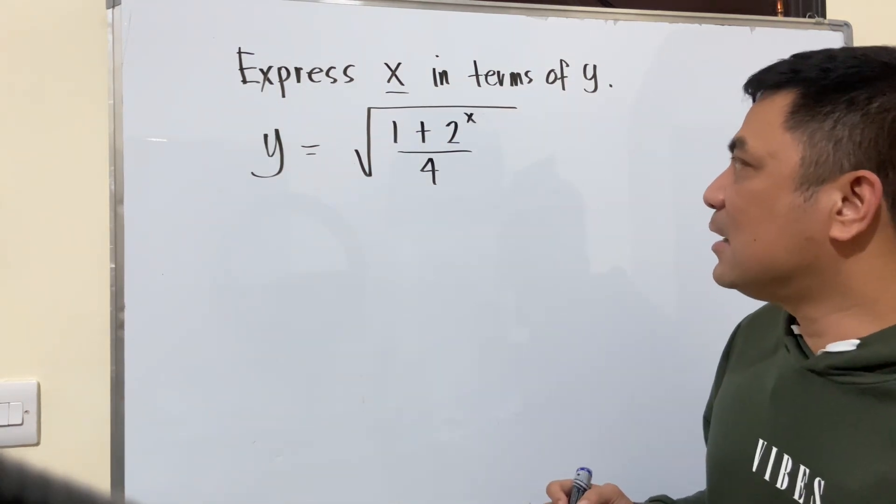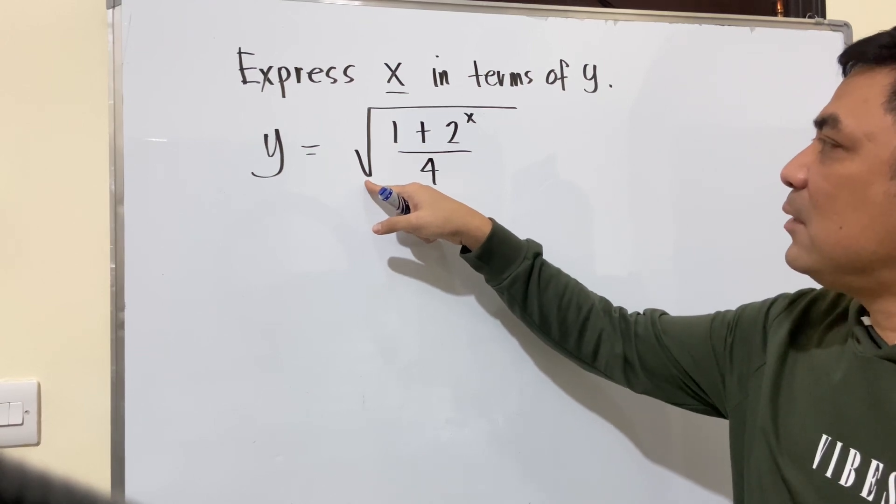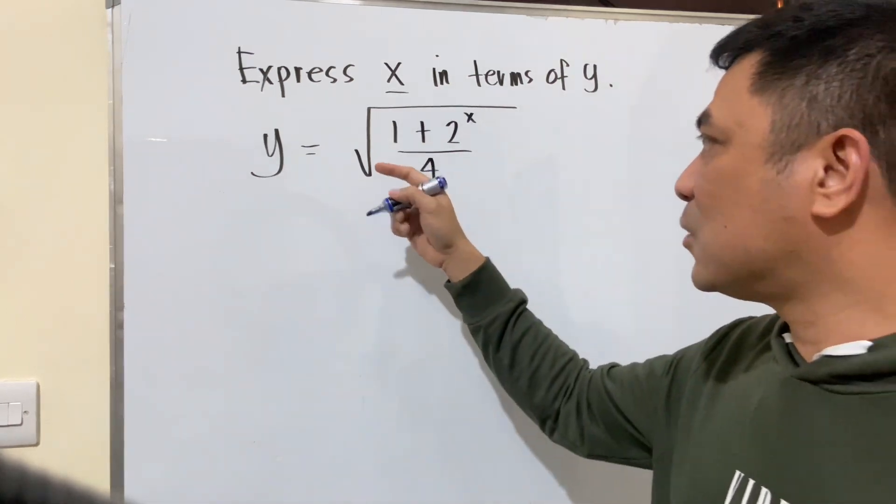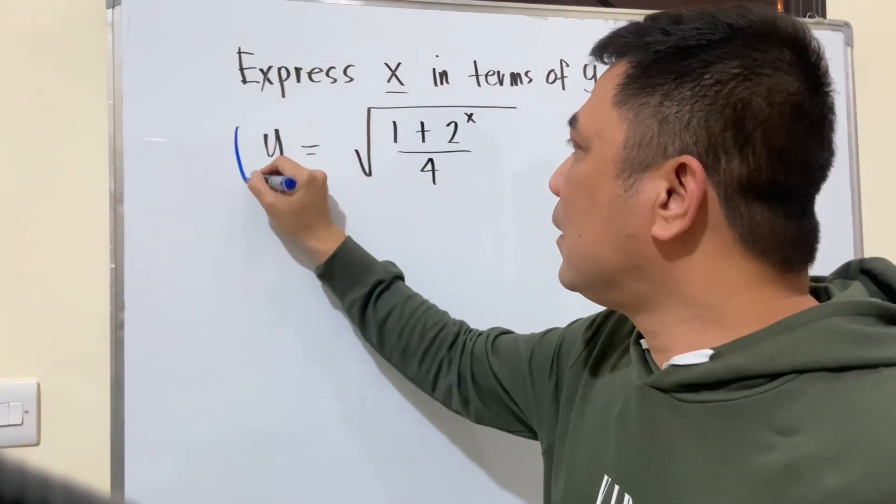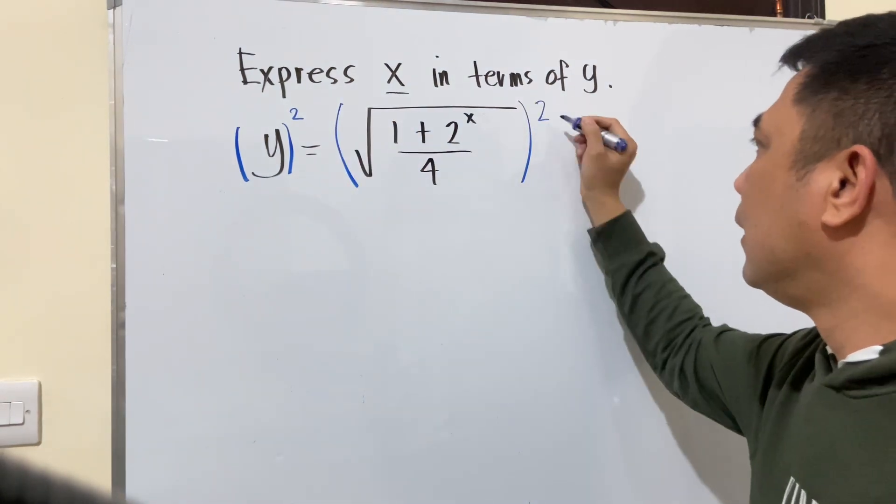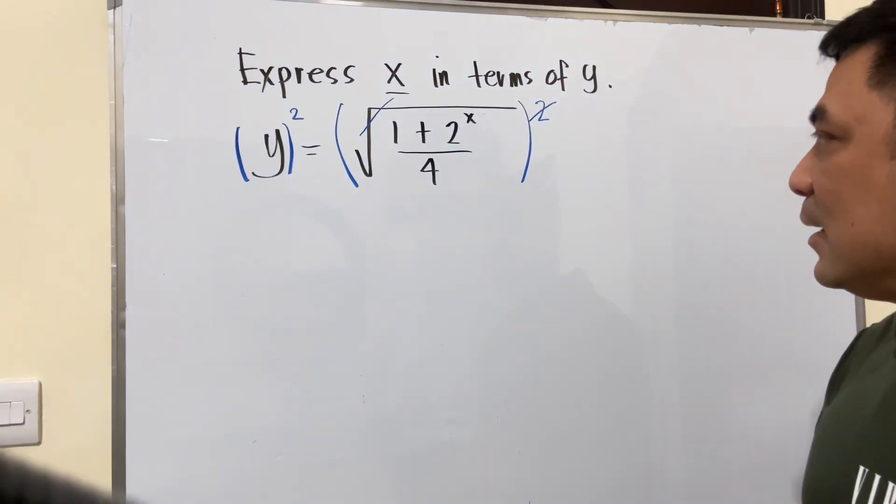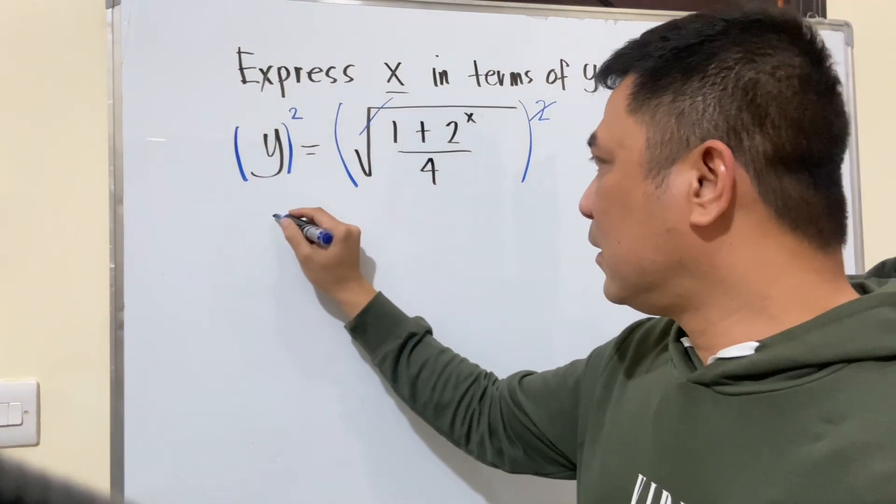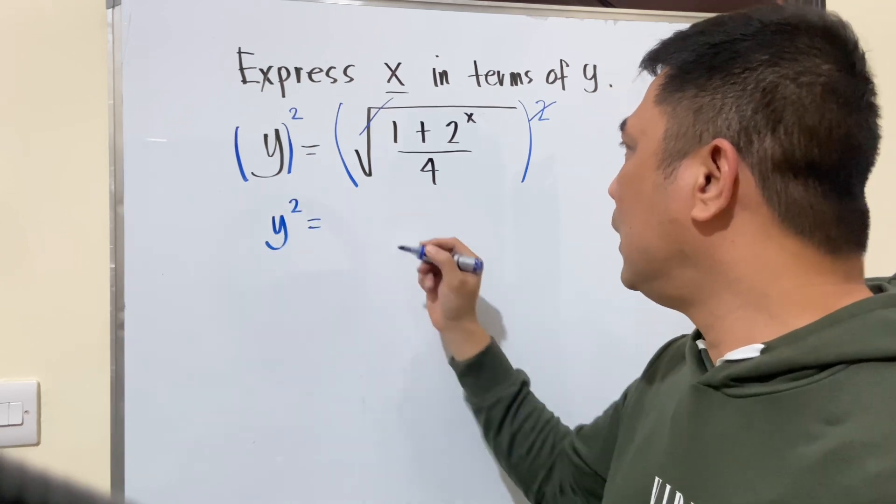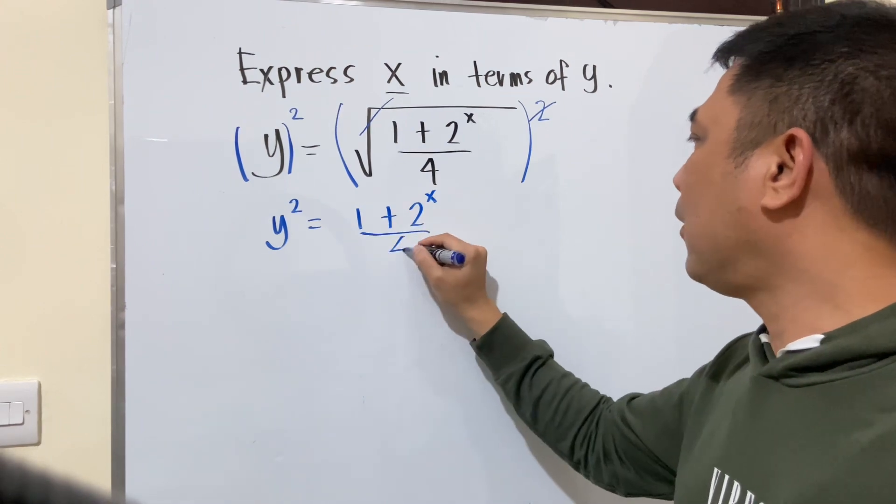The first challenge here is how we can remove the radical sign. To remove the radical sign since this is square root, let's take the square of both sides. This will cancel and then the 2 there will cancel. Therefore you have y squared equals 1 plus 2 raised to x over 4.